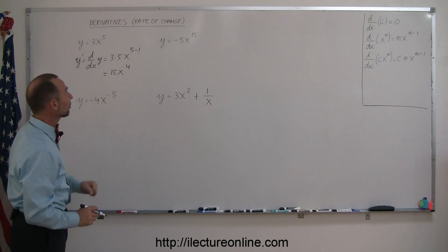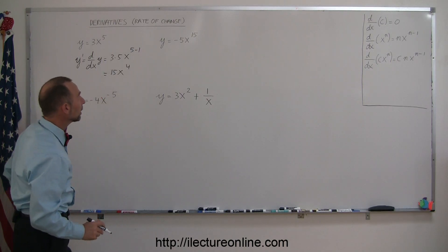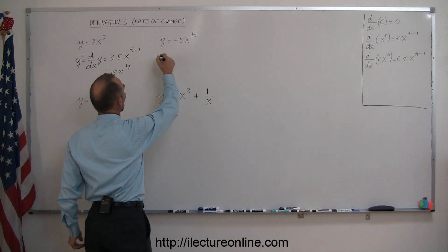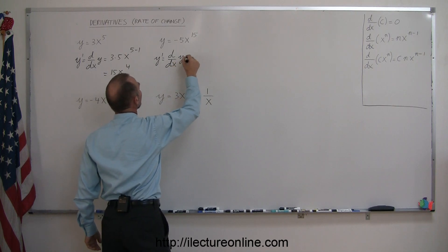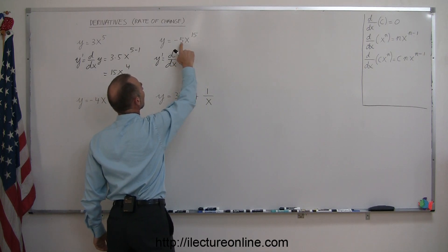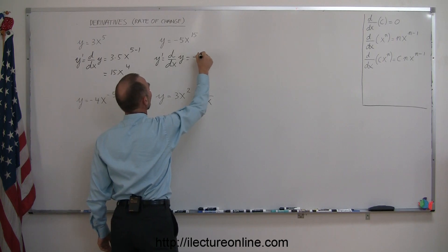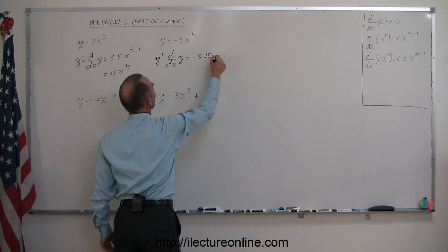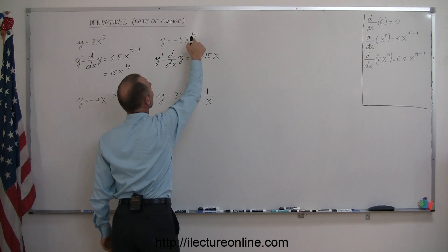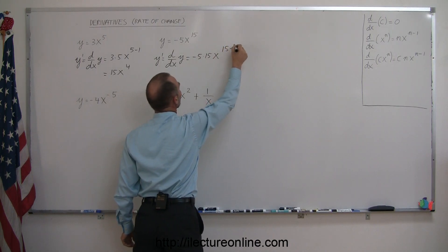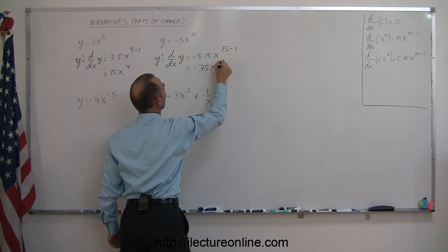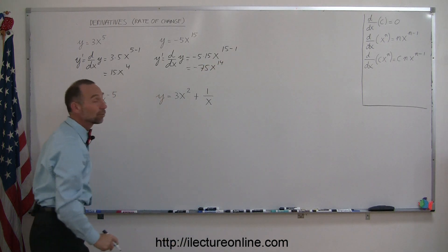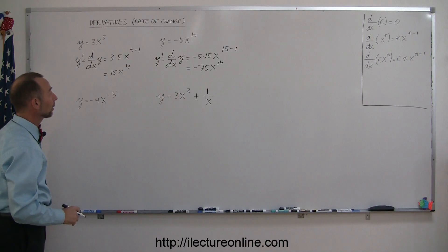Okay, looking at the second one, and applying the same rule, we have y prime, which also means d/dx of y, is equal to, again, multiply the constant times the exponent, so we have minus 5 times 15 times x to the exponent minus 1, 15 minus 1, so this equals minus 75x to the 14th power. All right, some good examples of how to apply those rules.